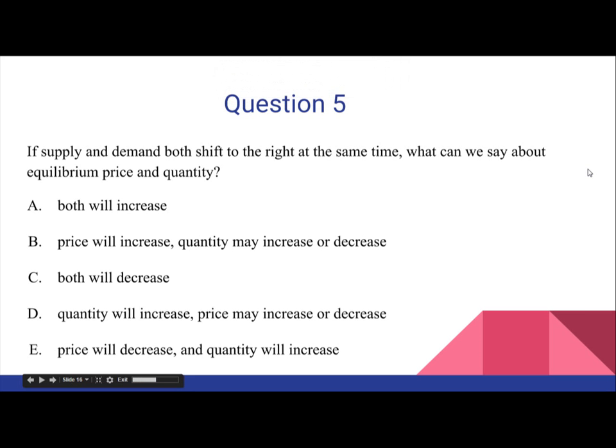Question 5. If supply and demand both shift to the right at the same time, what can we say about equilibrium price and quantity? A. Both will increase. B. Price will increase, but quantity may increase or decrease. C. Both will decrease. D. Quantity will increase, price may increase or decrease. E. Price will decrease and quantity will increase.